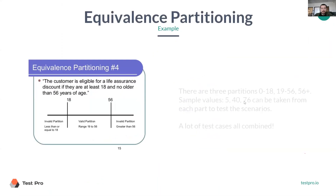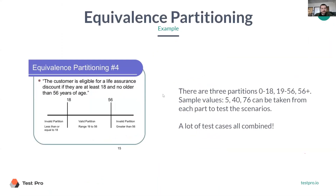Taking the same example, we don't want to test every value like zero, one, two, three, all the way to 18. And then imagine after 56, are you going to go all the way to like a million? That's like a million test cases — no way.